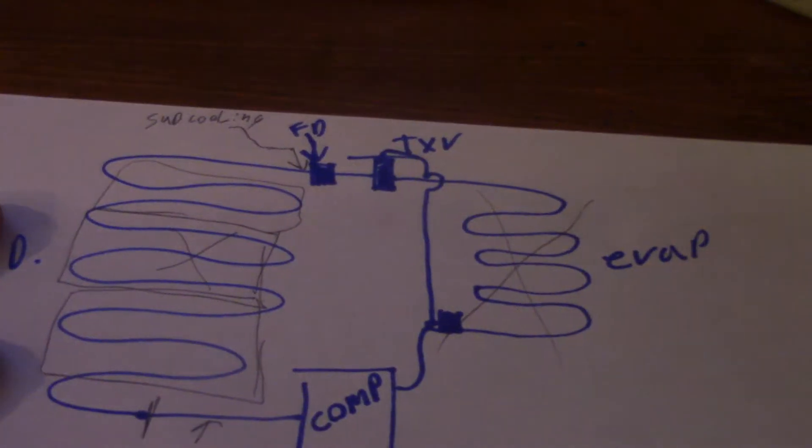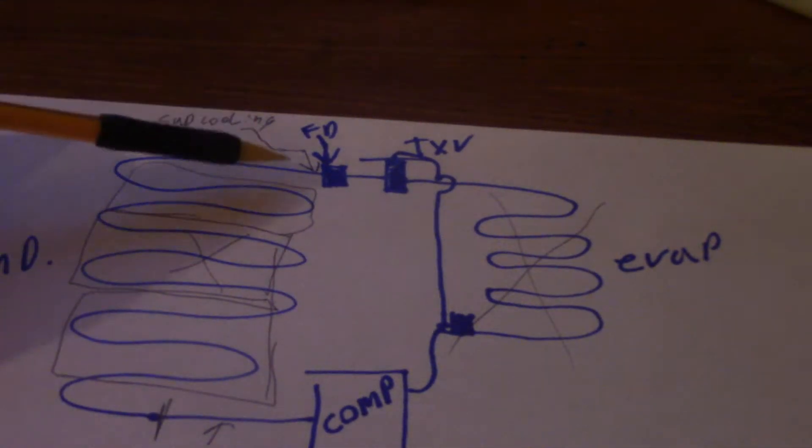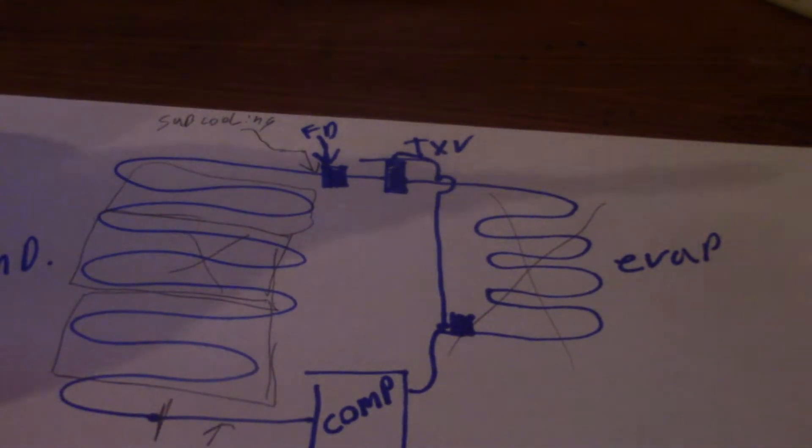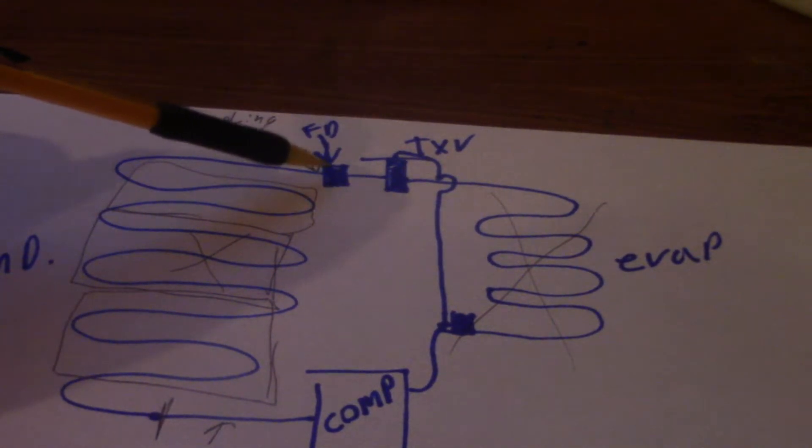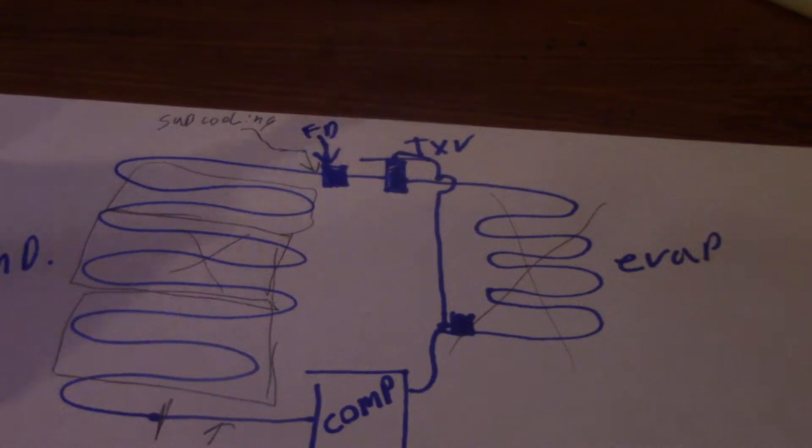I've got to move my fat hand out of the way, right? Subcooling is taken right here. That's where you get a pressure and temperature. Not necessarily saying before the filter dryer, I'm just showing the filter dryers in the liquid line with the TXV.